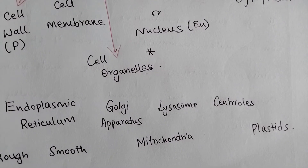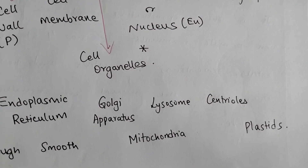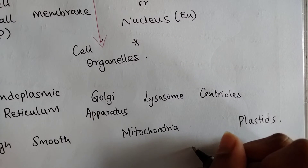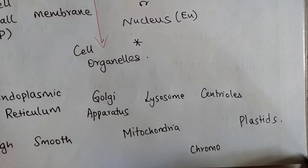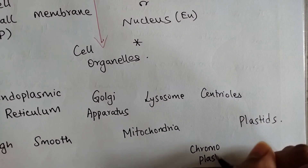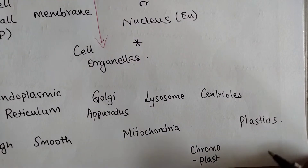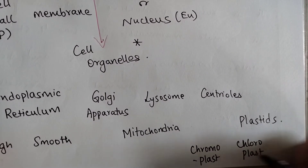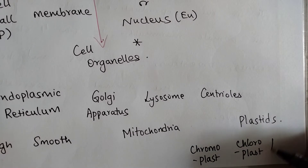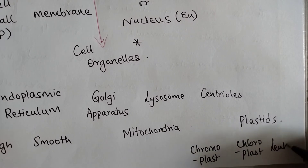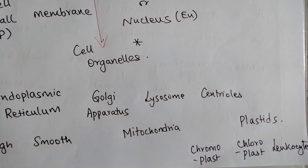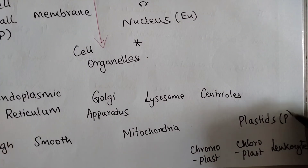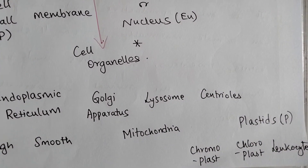We have plastids. Plastids are a set of organelles and there are different types. If you know them, you can add them to the concept map. The three types of plastids are chromoplast, chloroplast — which you might have heard before — and leucoplast. It should be kept in mind that plastids are only found in plant cells.